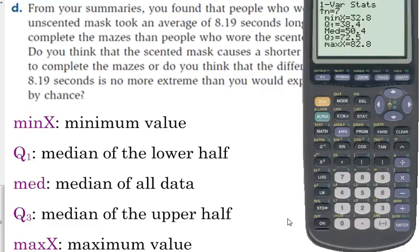In this case, 50 to the 4. And then for each half, it finds the median of the lower half, finds the median of the upper half. Those can be helpful. So I need you to write down those five numbers. We also call that the five-number summary. Write down those five numbers for the unscented masks.